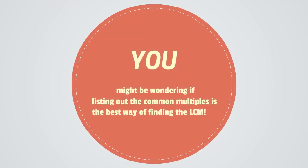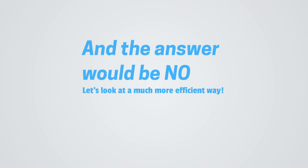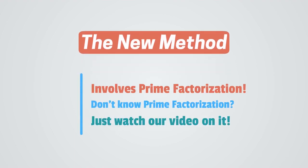You might be wondering if listing out the common multiples is the best way of finding the LCM. And the answer would be no. Let's look at a much more efficient way. The new method involves prime factorization. Don't know prime factorization? Just watch our video on it.